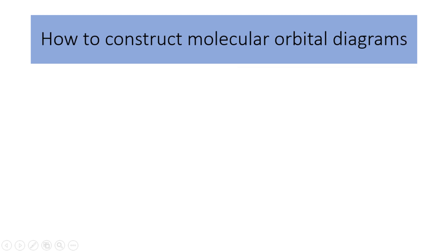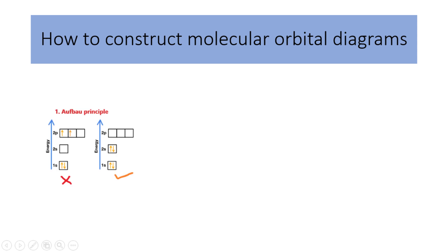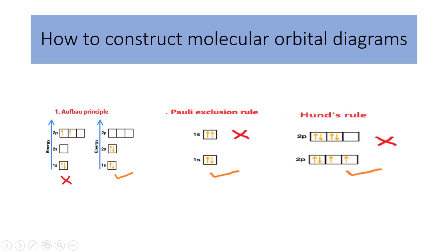To construct molecular orbital diagrams, you should remember the same three principles used for atomic orbitals. The Aufbau principle: electrons fill subshells of the lowest available energy first, then subshells of higher energy. The Pauli exclusion principle: no two electrons in the same atom can have identical values for all four of their quantum numbers. Hund's rule: if there are two or more degenerate orbitals — orbitals with the same energy — one electron must enter each one until they are all half full before pairing up.